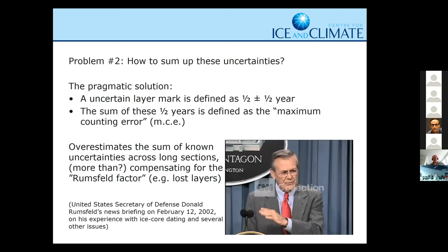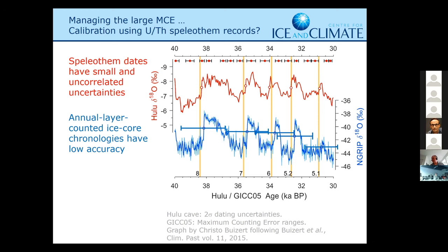We knew already when we did it that this was likely going to overestimate the errors, but it's better to go above than below when estimating errors, and this approach was at least very transparent. So you have this very large maximum counting error, which for some people is really seen as the limit of how useful ice core records are. If you compare to, for example, speleothem dates, you see the difference quite clearly. Uranium-thorium dated speleothem records have very small uncertainties. This is back in MIS-3, around 30 to 40,000 years ago, and these are the individual error bars of the speleothem — the Hulu record. They're just a few hundred years at most, while ice cores have these huge error bars because we have inherited all the errors above where we are.